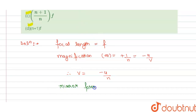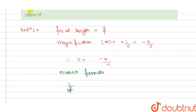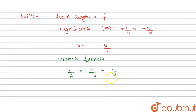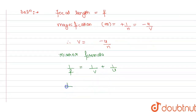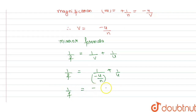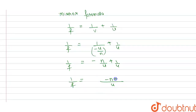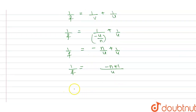The mirror formula is 1/f = 1/v + 1/u. We substitute v = -u/n into the formula, giving 1/f = -n/u + 1/u. Solving this, 1/f = (1 - n)/u, so u = f(1 - n).